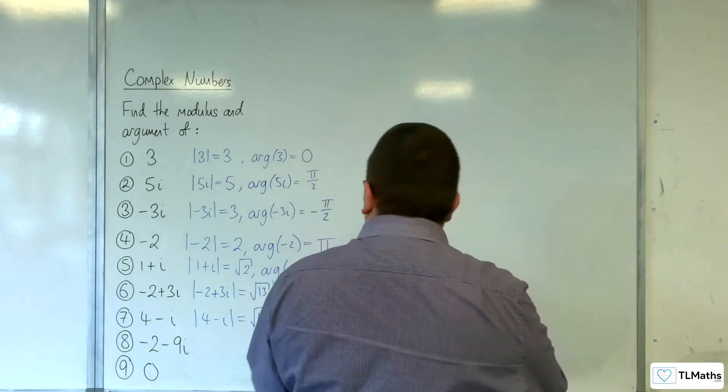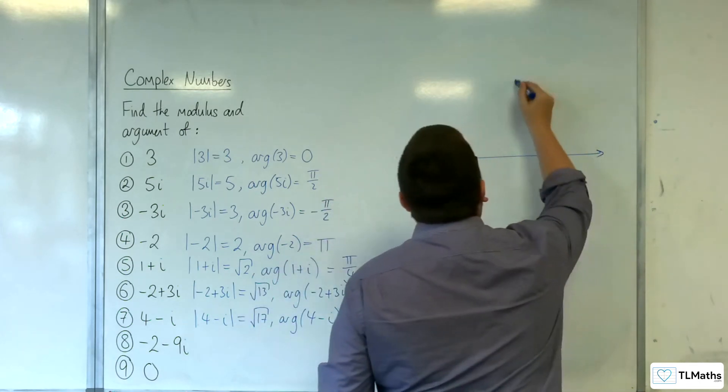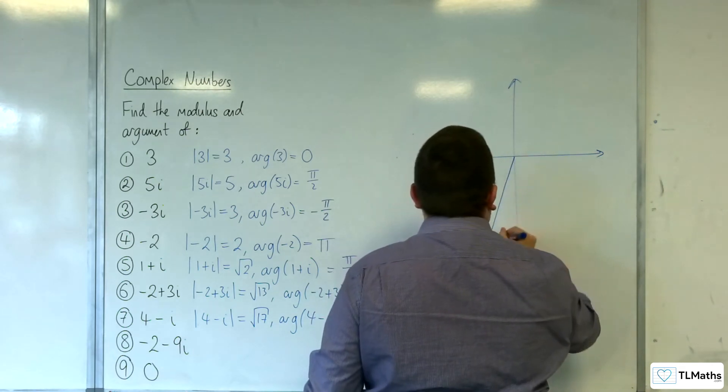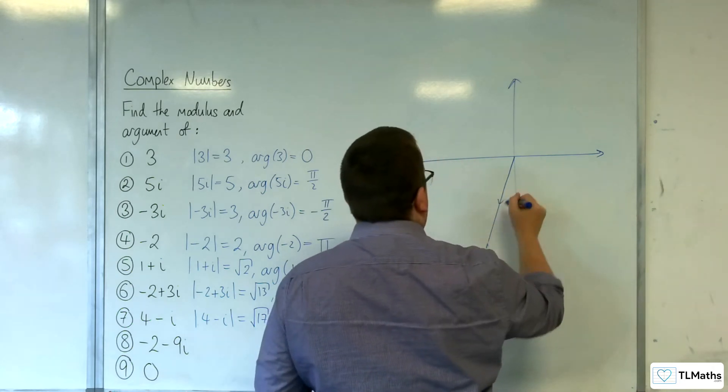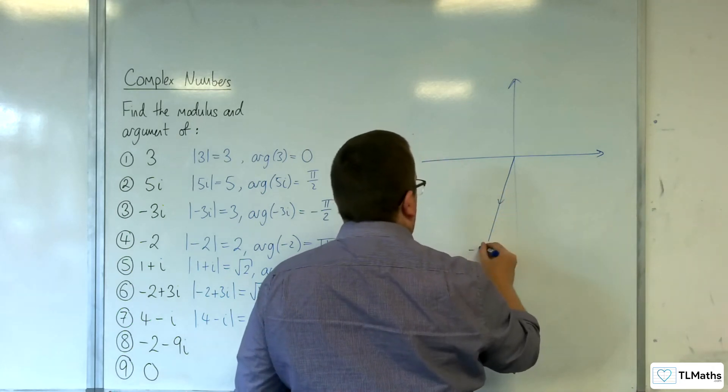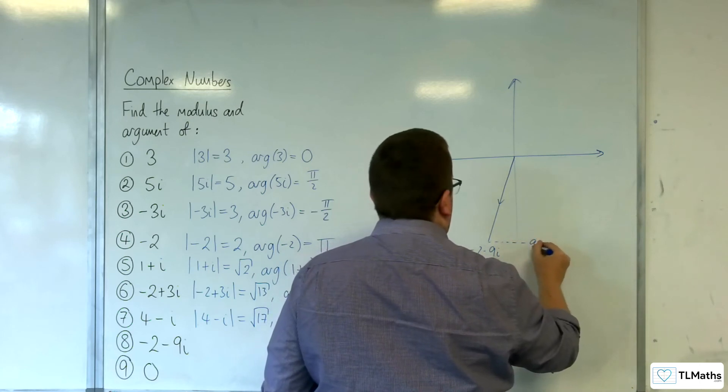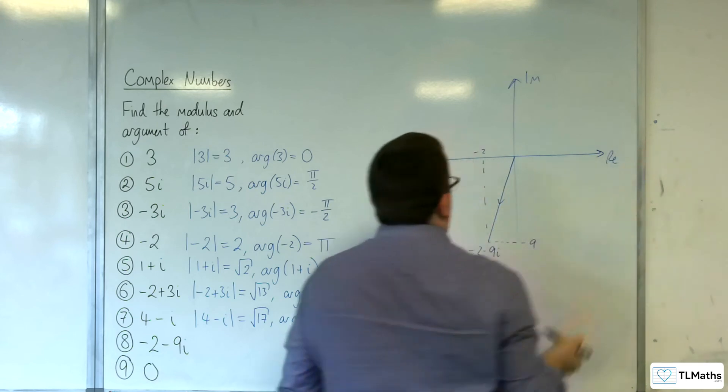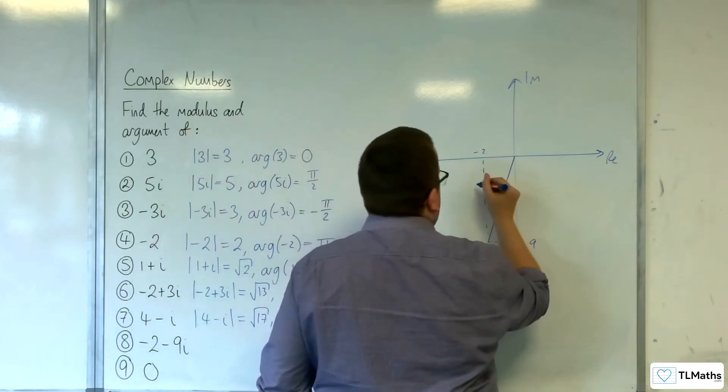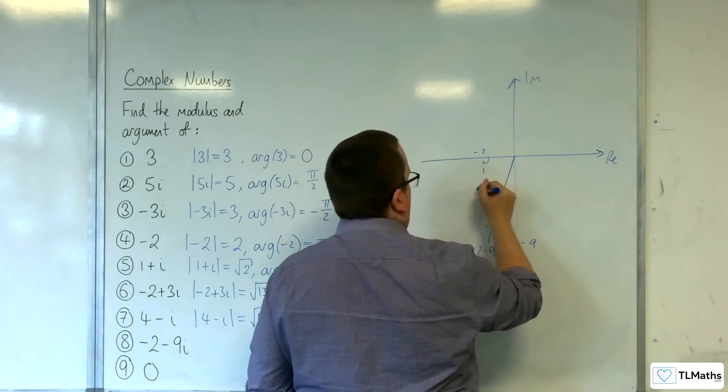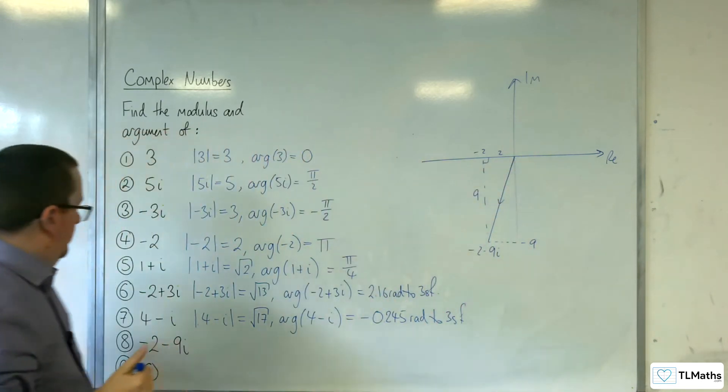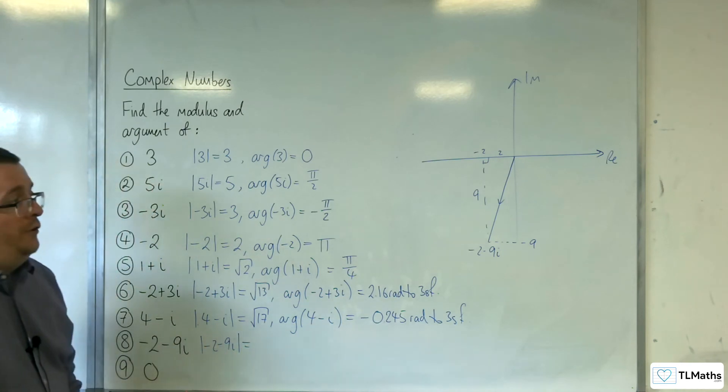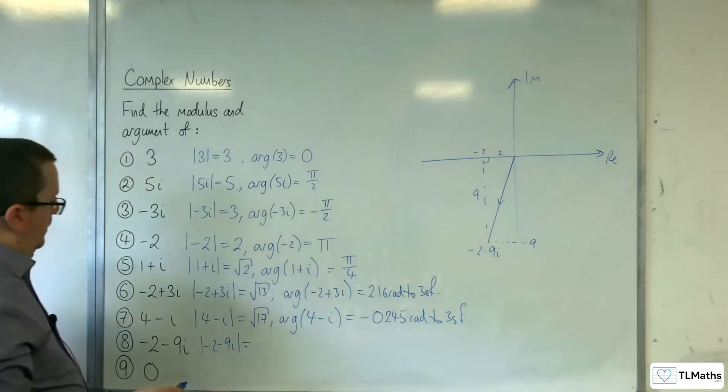Let's have a look at the next one. -2 - 9i. -2 - 9i, something like this. It's -9, it's -2 imaginary real. That's length 9, that's length 2. So what we've got then? The length is the square root of 2² + 9². So that's root 85.